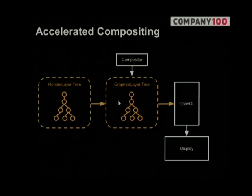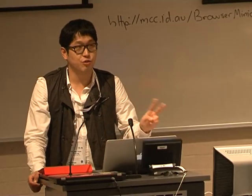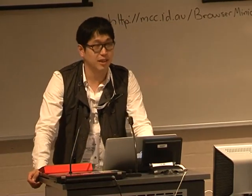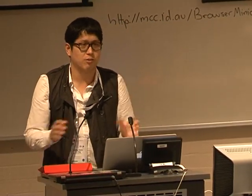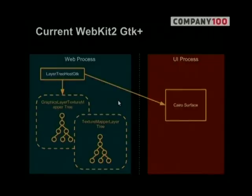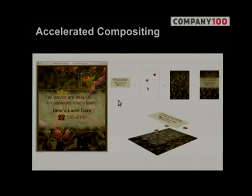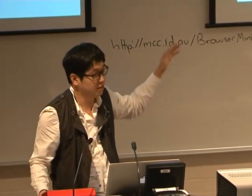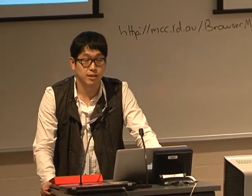Before I explain about threaded accelerated compositing, I need to talk about what accelerated compositing is. Over the past two years, hardware accelerated compositing has been a hot issue, and almost all web engines have implemented this feature. This example shows how to composite each layer in the accelerated compositing case. There are content layers, live layers, and a background layer, and the GPU can composite these layers onto the screen. This technique is called accelerated compositing.